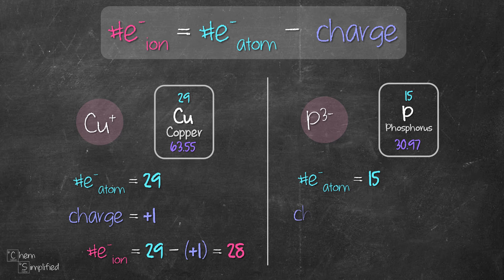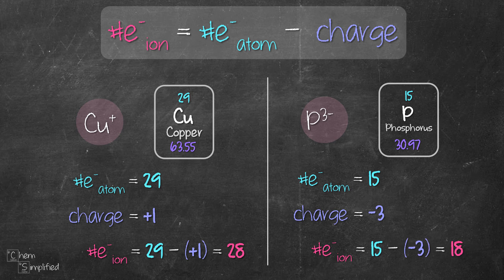The charge for phosphide ion is negative 3. We take 15 minus negative 3. That simplifies to 15 plus 3, which equals 18. That's the number of electrons in phosphide ion. Wasn't that simple?